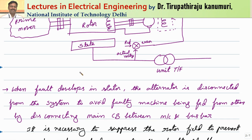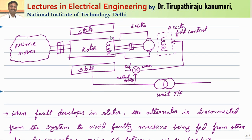When a fault develops in the stator, the alternator is disconnected from the supply. But that is not sufficient for the case of an alternator, because even if the alternator is disconnected, the prime mover is still connected and rotating the exciter. The exciter automatically supplies the field, and as the field is there and rotating, it will continue to produce a voltage and supply the fault — leading to damage of the alternator even though it is disconnected from the grid.